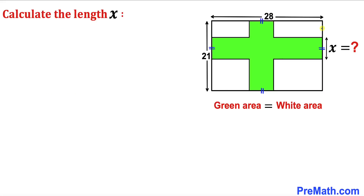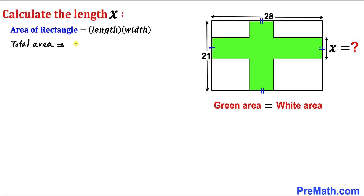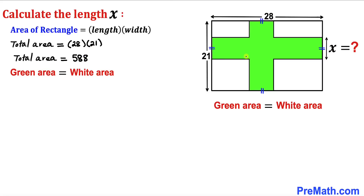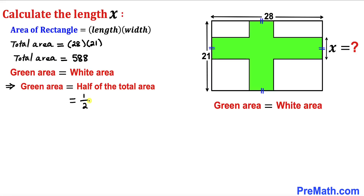Let's calculate the area of this big rectangle. Recall the formula: area equals length times width. Therefore the total area is 28 times 21, which gives us 588. Since the green area and the white area are equally divided, the green area is half of 588, which equals 294.